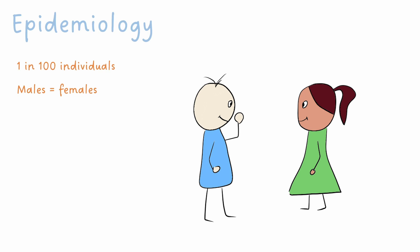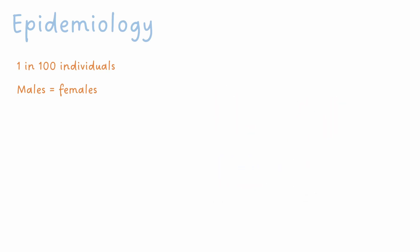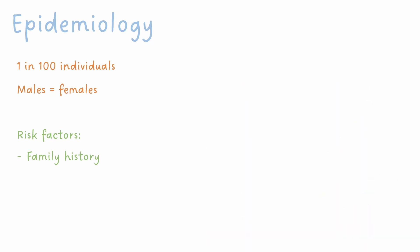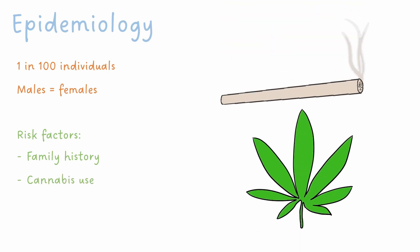Looking at epidemiology, schizophrenia is present in around one in a hundred individuals. It's also equally present in males and females, although males are more likely to have higher severity of symptoms. One risk for developing schizophrenia is family history. In fact, an identical twin has a 46% chance of developing schizophrenia if their twin is also affected. Use of cannabis, particularly in adolescents, is also associated with an increased risk in developing it.